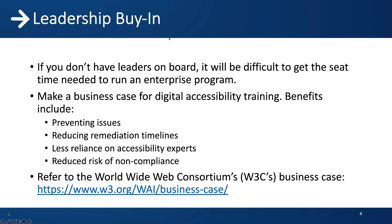We'll start with the pre-implementation phase. The first step is leadership buy-in. If you don't have leaders on board, it will be difficult to get the seat time or budget needed to run an enterprise training program. To get buy-in, you may need to do a business case outlining the benefits, which include preventing issues, reducing remediation timelines, less reliance on external accessibility experts, and reduced risk. For help, refer to the World Wide Web Consortium's Accessibility Initiatives Business Case.